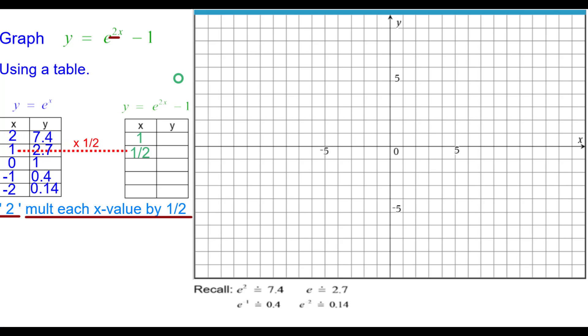And taking half of each of those x coordinates. Press pause as you need to any time. The minus 1, we need to subtract 1 from each y value. So 7.4 minus 1 would be 6.4. And then we can plot the point 1 comma 6.4. We're going to ask you to pause and finish these 4 points. Plot them and finish the graph. Resume when you're ready.